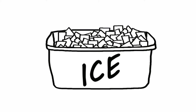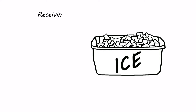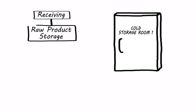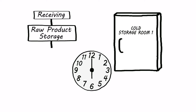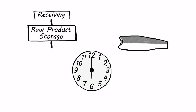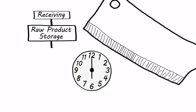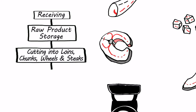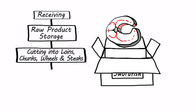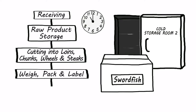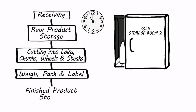Swordfish, already headed, gutted, with the tail removed, is received on ice from a primary processor. The fish is stored on ice in cooler number one overnight. The next day at 6 a.m., the swordfish is taken out of the cooler, removed from the ice, cut into loins, chunks, wheels, and steaks based on customer orders, weighed, and packed in labeled boxes. By 11 a.m., all the boxed finished product is stored in cooler number two until shipment.